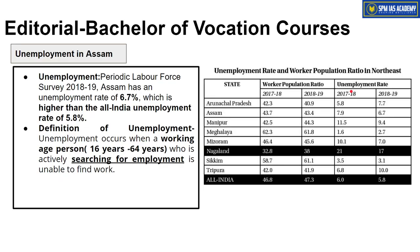First let us see some data regarding unemployment in Assam. According to the Periodic Labour Force Survey — which is conducted regularly to understand labour force participation and unemployment in our country — the 2018-19 data shows that Assam has an unemployment rate of 6.7%, which is higher than the all-India unemployment rate of 5.8%. And this is pre-lockdown data; during 2020-21 the unemployment rate increased significantly.